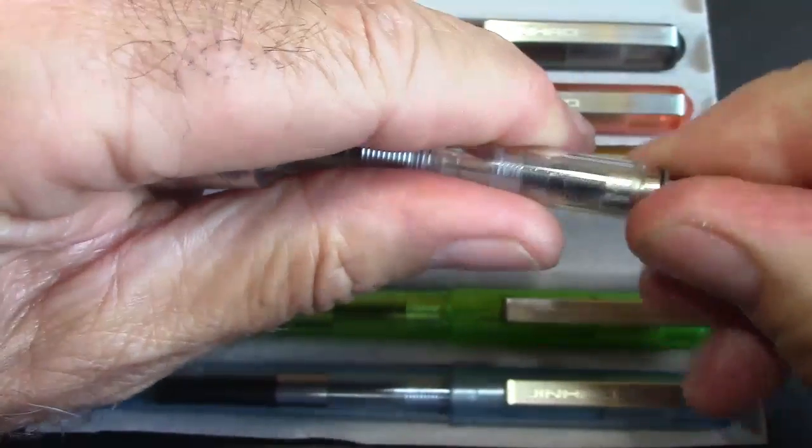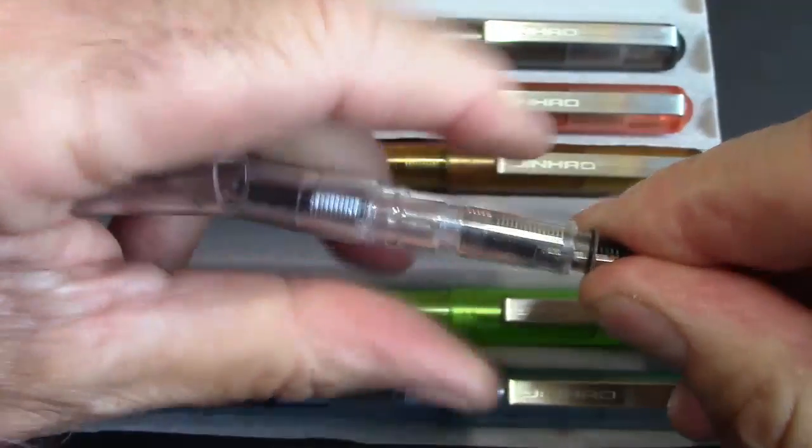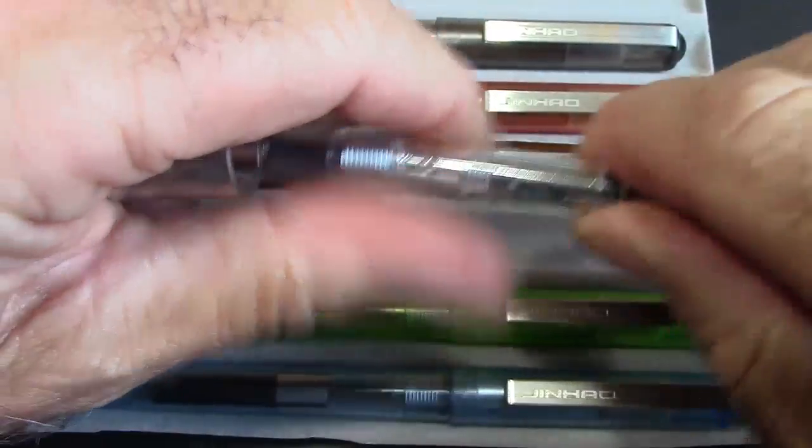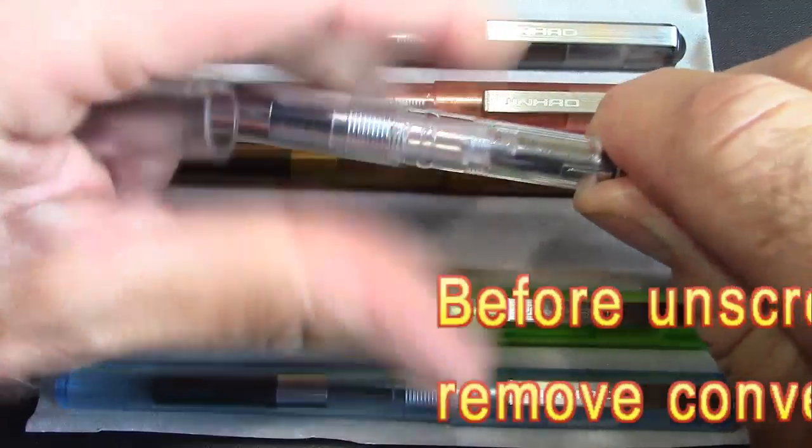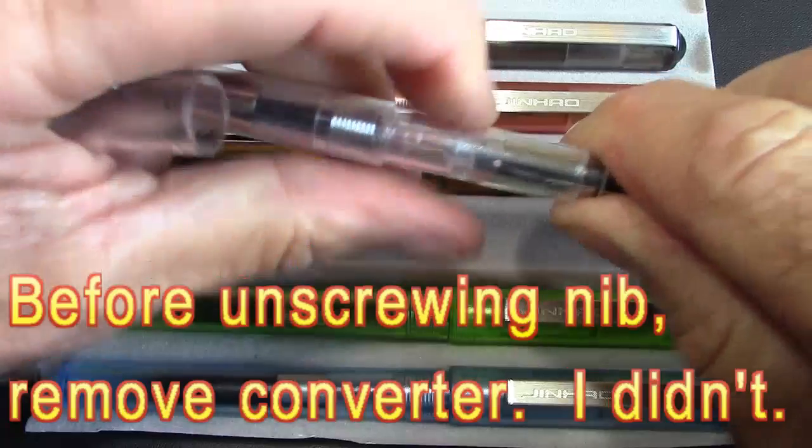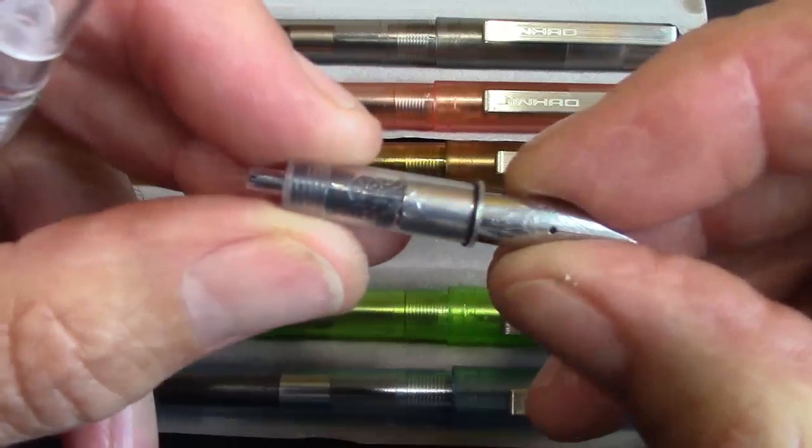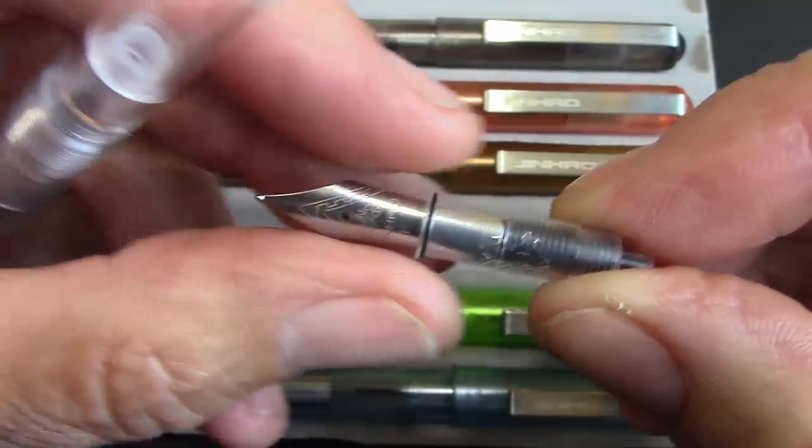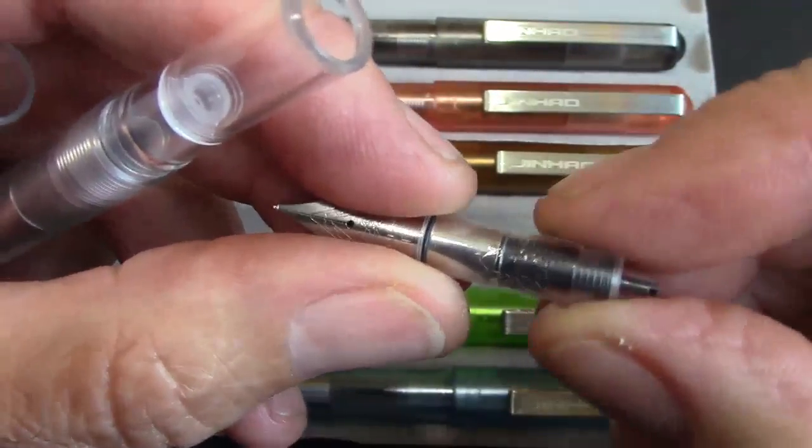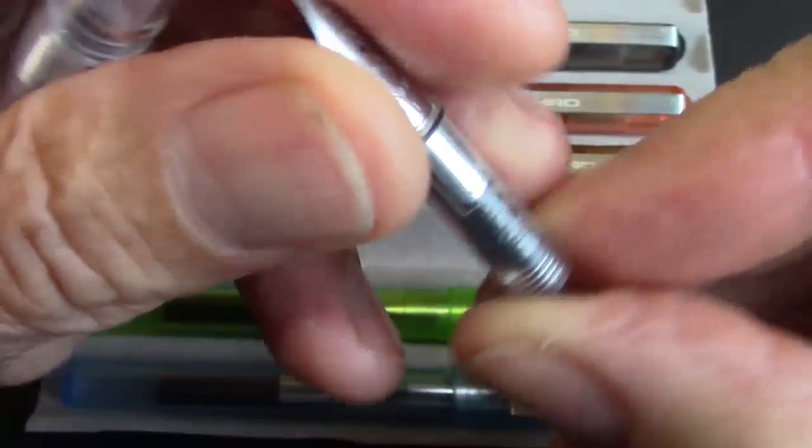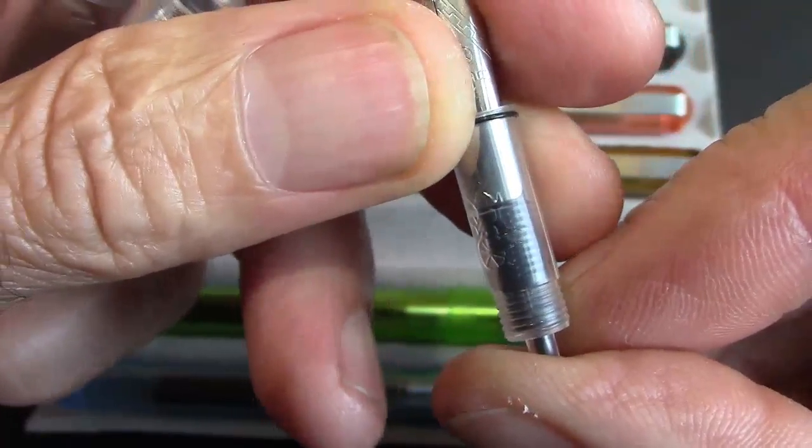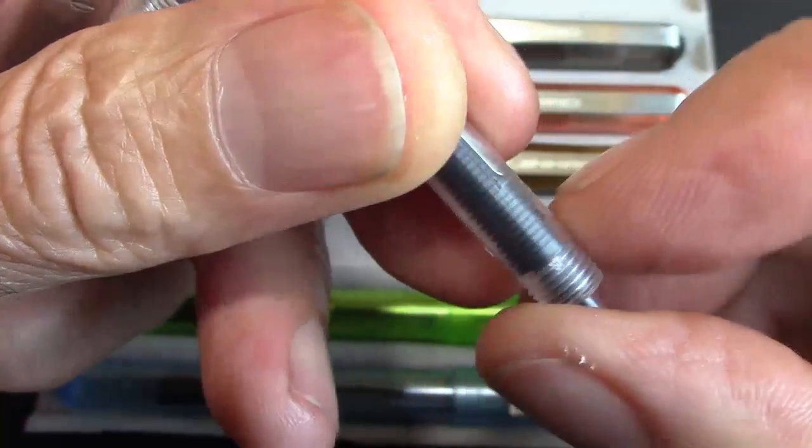But I stand corrected. As I try to extract the nib and feed, it is screwed in. I had to use more pressure than I could exert over the camera. Now, this is the new one. You have your O-ring here. You have your threads. You have the kind of interesting logo in there.